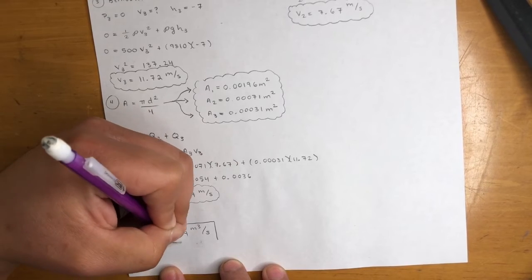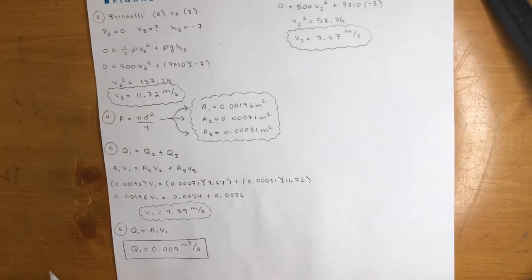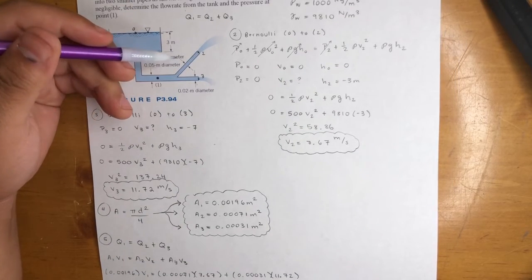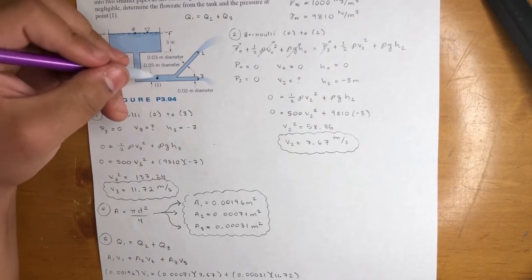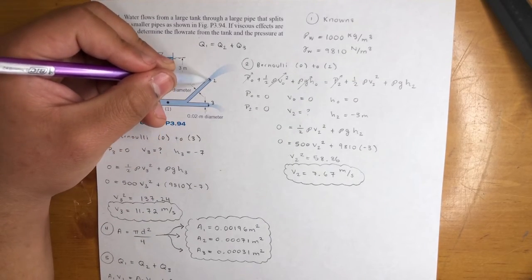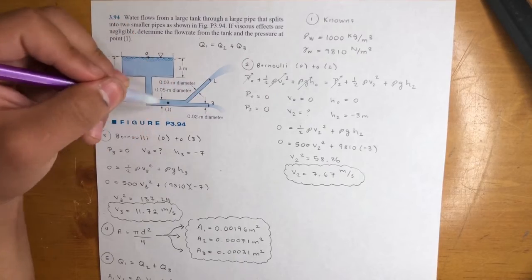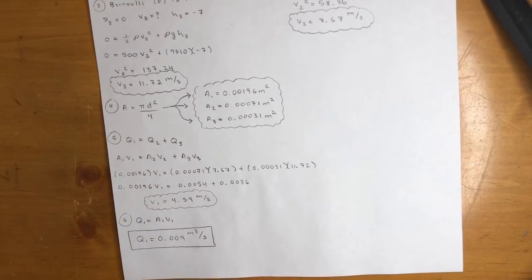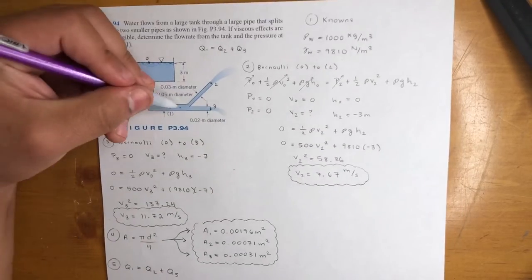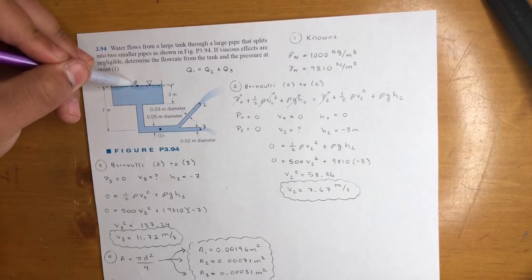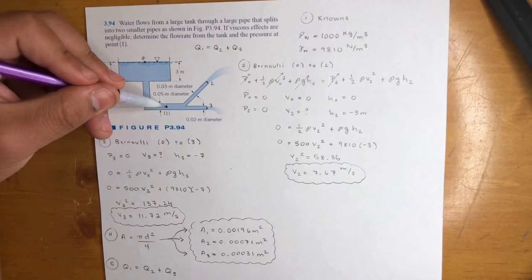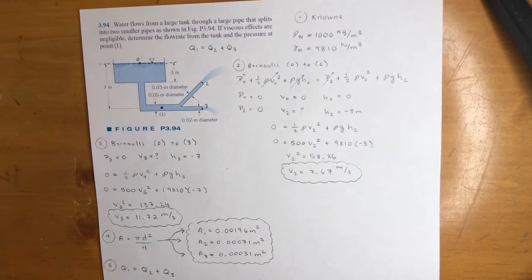To confirm: the flow rate at point one is 0.009 m³/s. If you add the flow rates at points two and three together, they also equal 0.009 m³/s, which is consistent with continuity. Now we know velocity and height at point one, so we can find the pressure.